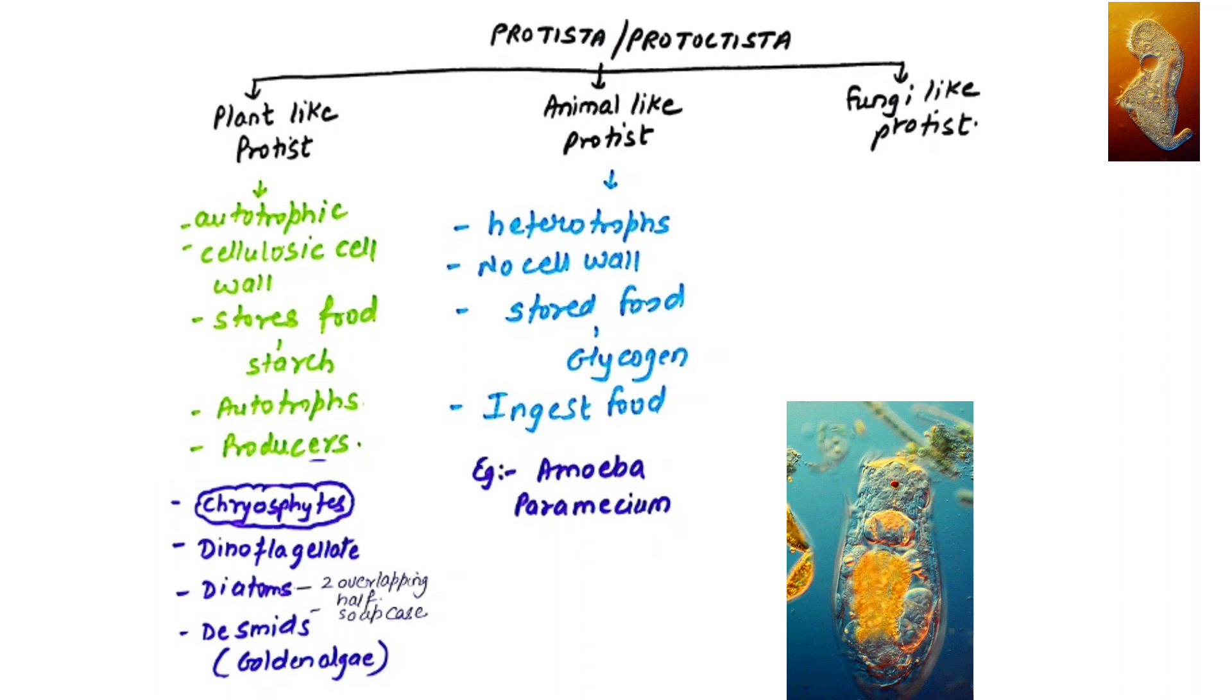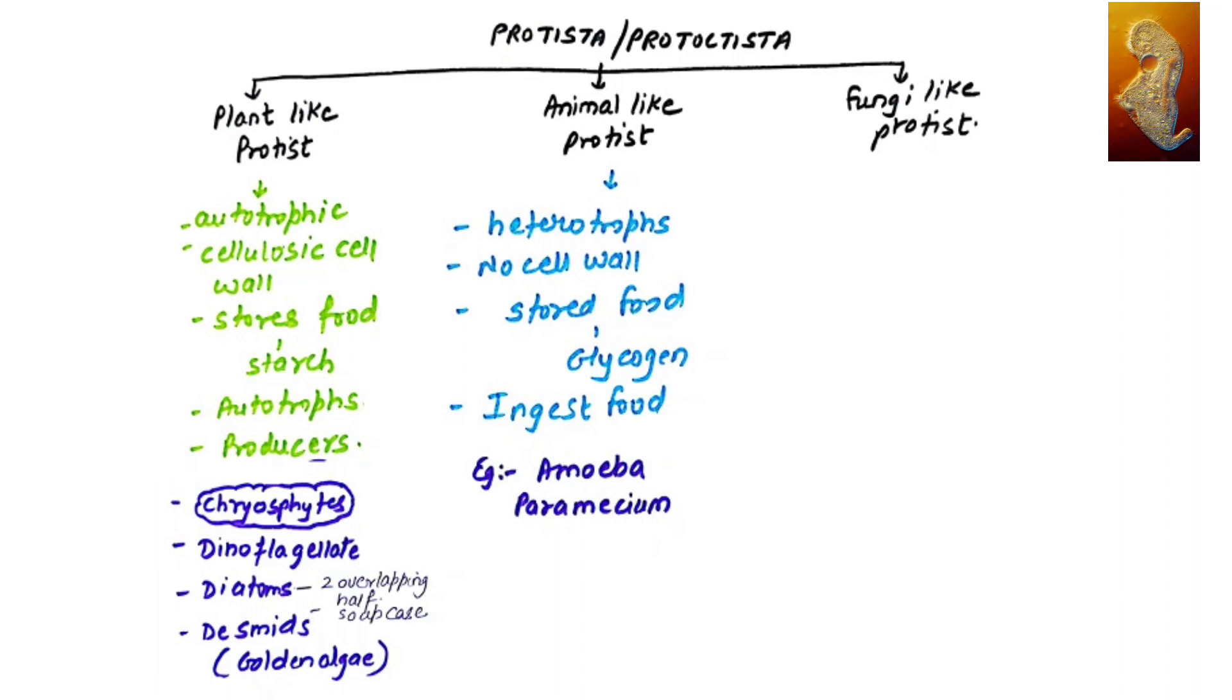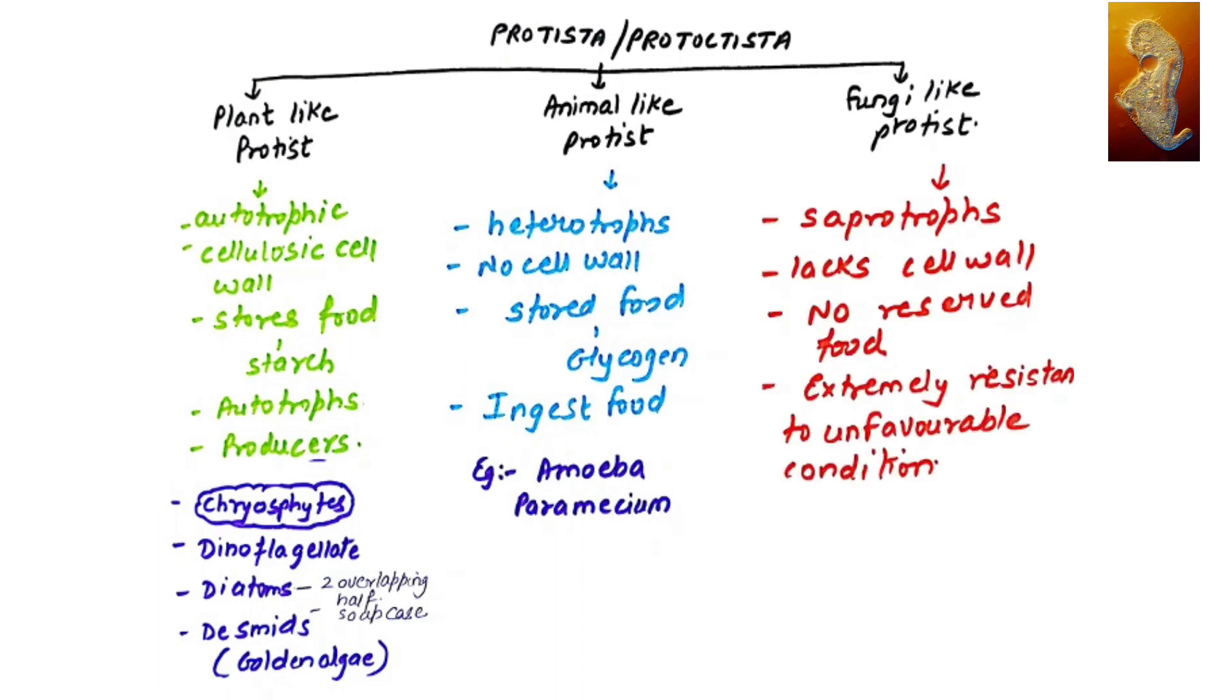When I say fungi-like protists, definitely they are saprophytic, so we say they are saprotrophs. They derive nutrition from dead and decaying organisms. They lack cell wall. There is no reserved food in them, and they are extremely resistant to unfavorable conditions. An example is slime mold.